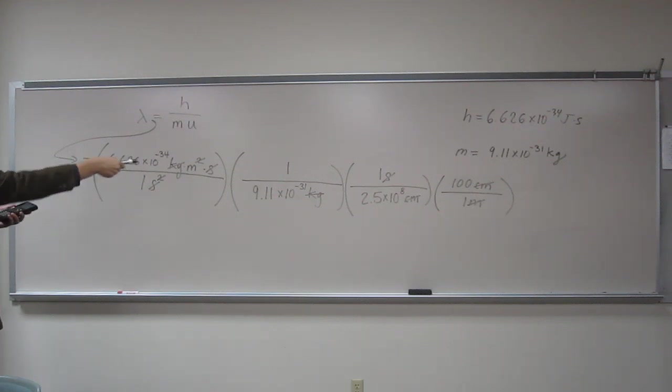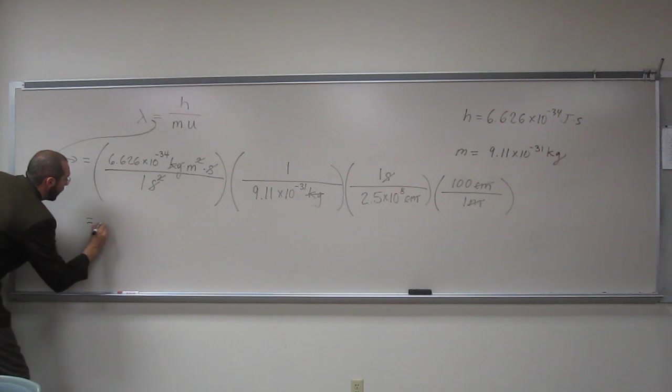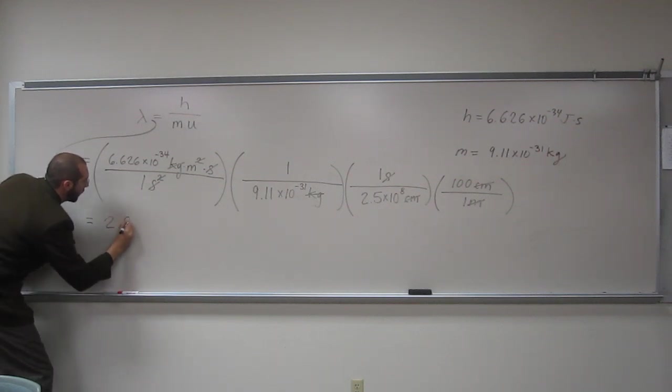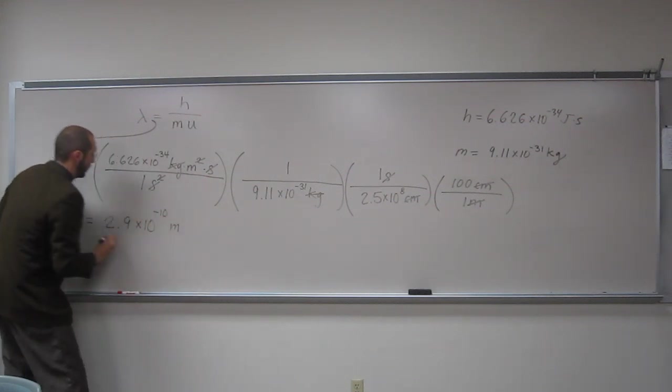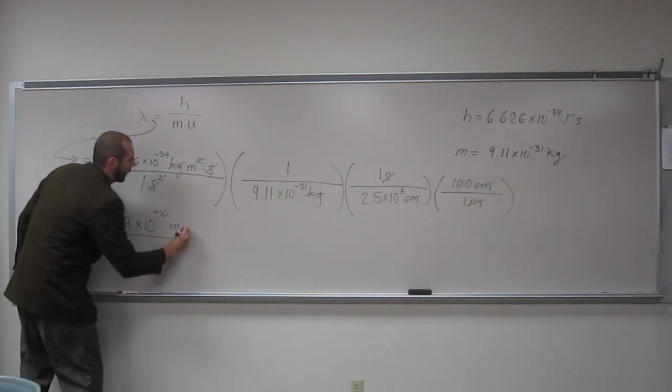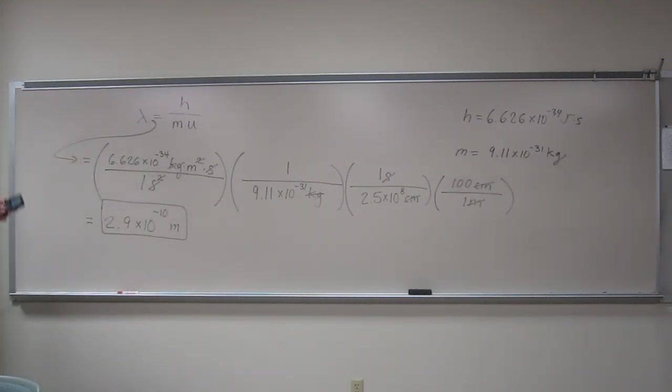Significant figures. I get 2.9 times 10 to the negative 10 meters. So that's the wavelength of an electron going at that velocity.